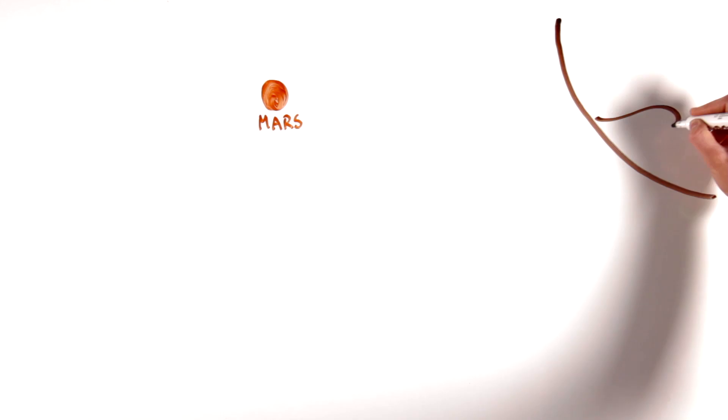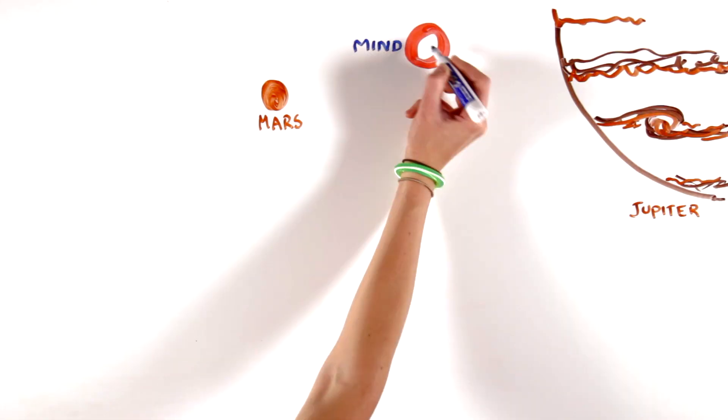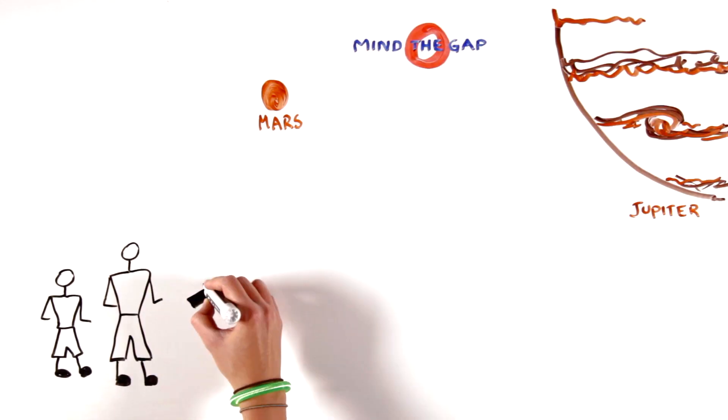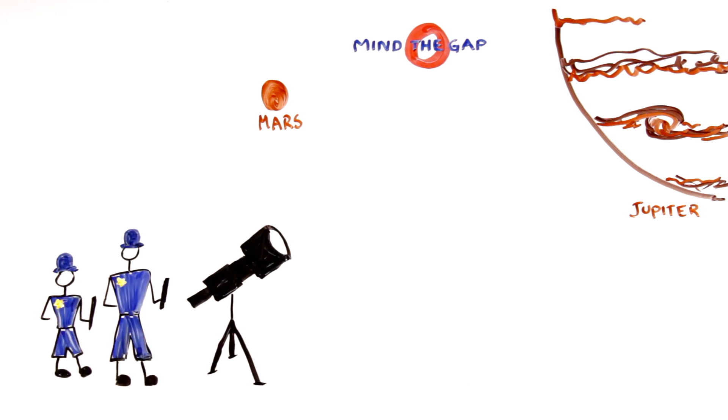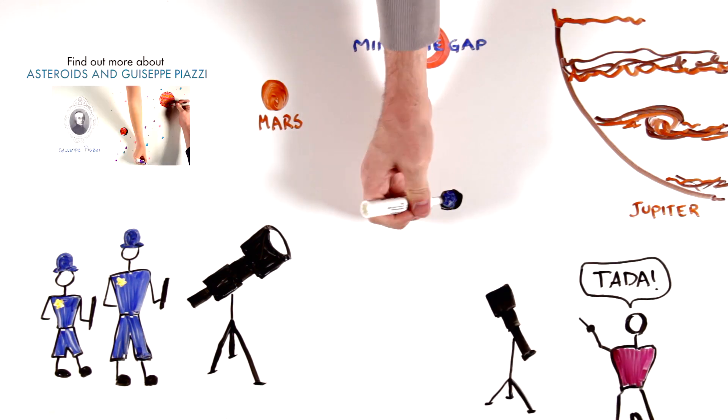Wanting to fill the gap, astronomers mounted a search to find the missing planet. One group of astronomers which banded together called themselves the celestial police. Although not one of the police, Giuseppe Piazzi found the first object in the gap, Ceres, in 1801.